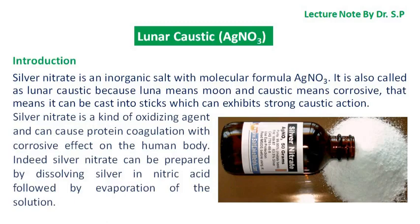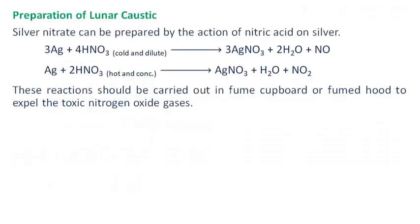Silver nitrate can be prepared by dissolving silver in nitric acid followed by evaporation of the solution. The reaction involves the action of nitric acid on silver, and these reactions should be carried out in a fume cupboard or fume hood to expel the toxic nitrogen oxide gases.